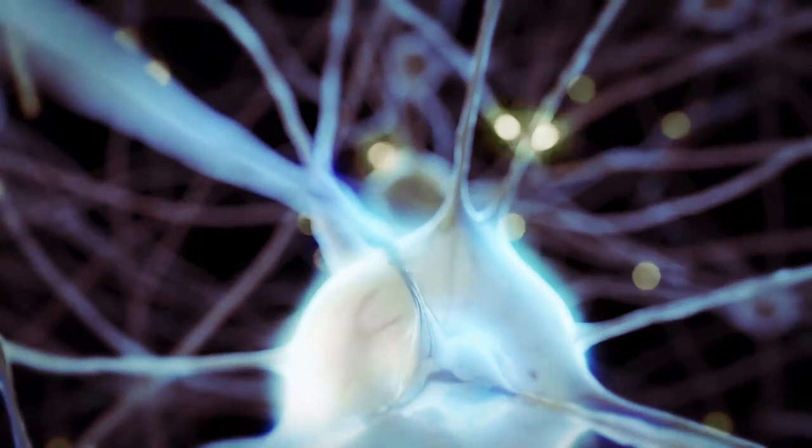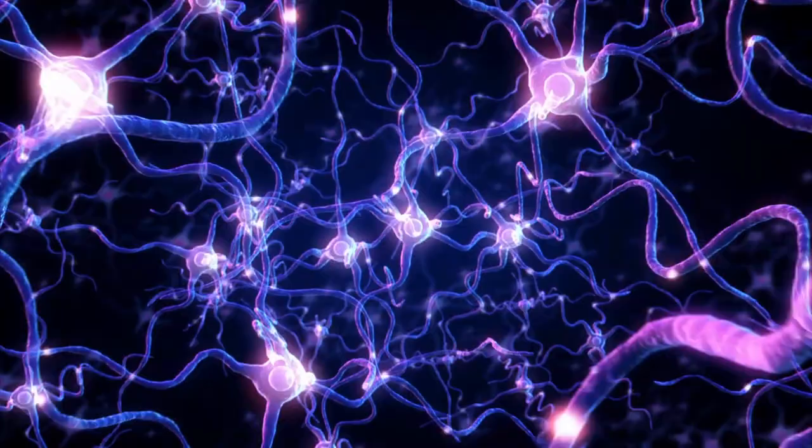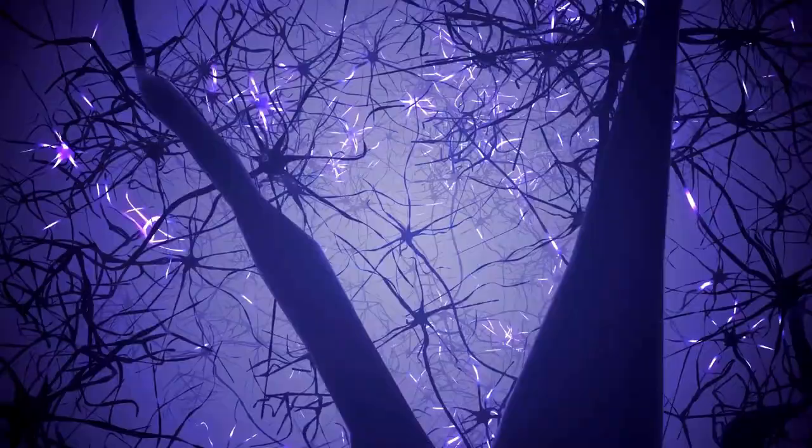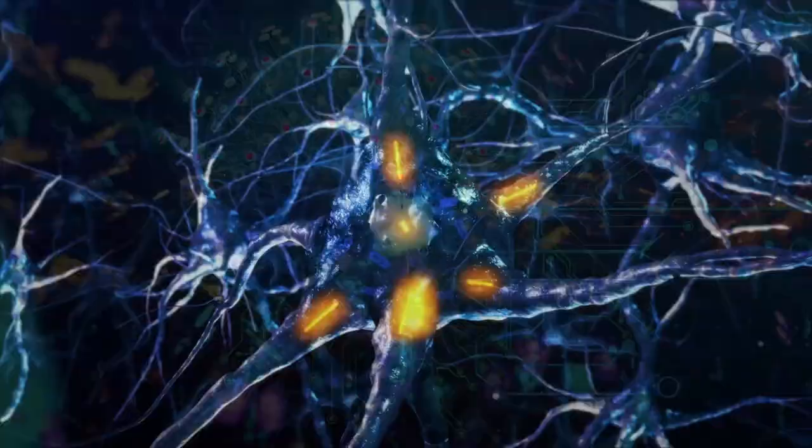If you were to look at a piece of brain tissue the size of a grain of sand, you would see that it contains 1 billion synapses and 100,000 neurons. What's even more amazing, they're all in communication with each other.